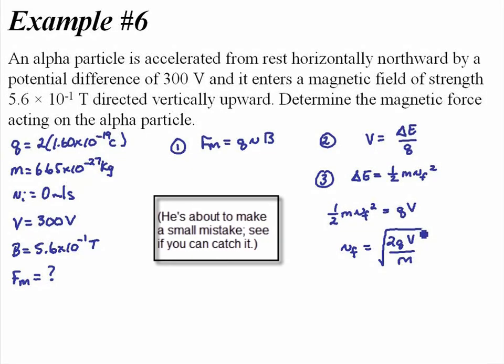We have the charge. We have the potential difference it's been accelerated through. We have the mass of the alpha particle. Put the numbers in.